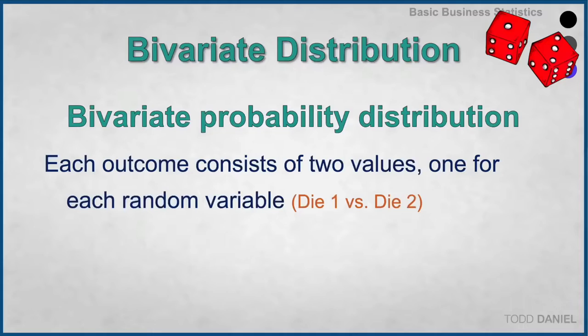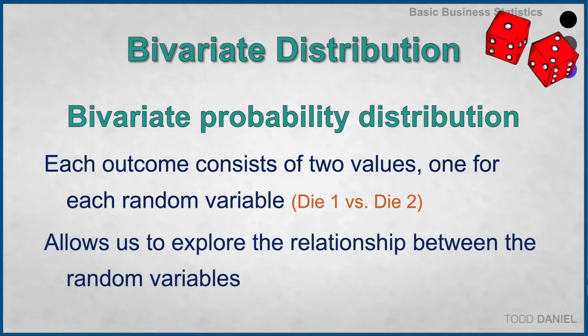Now our cross tabulation table might have eight rows and twenty columns. Regardless of which dice we use, the bivariate distribution would allow us to examine the relationships between the random variables.